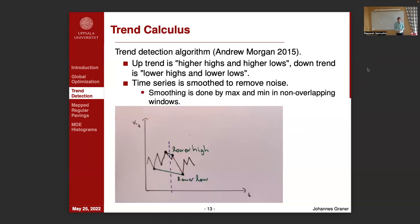The trend detection algorithm I have adapted for distributed computing is called Trend Calculus and was developed by Andrew Morgan in 2015. He defines an upwards going trend as a period of higher highs and higher lows than the preceding period, and a downtrend as having lower highs and lower lows. The algorithm starts with smoothing the time series to remove noise by partitioning it into non-overlapping windows and looking at the maximum and minimum value in each window. Here we have partitioned it into two windows where the second window has both a lower maximum and minimum, representing a downwards trend in this framework.